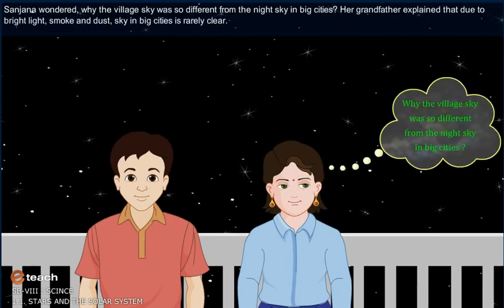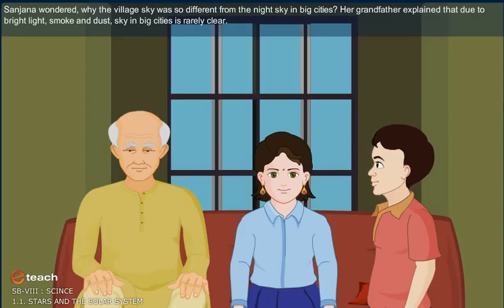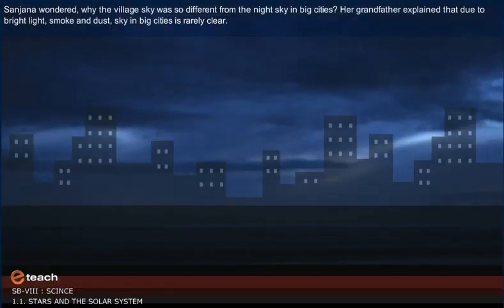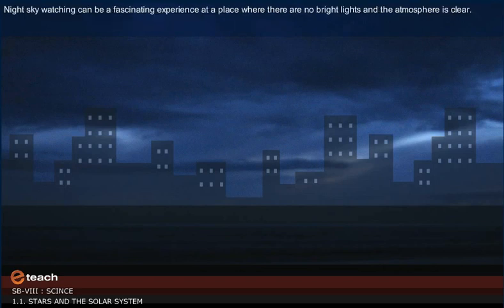Sanjana wondered why the village sky was so different from the night sky in big cities. Her grandfather explained that due to bright light, smoke and dust, sky in big cities is rarely clear. Night sky watching can be a fascinating experience at a place where there are no bright lights and the atmosphere is clear.